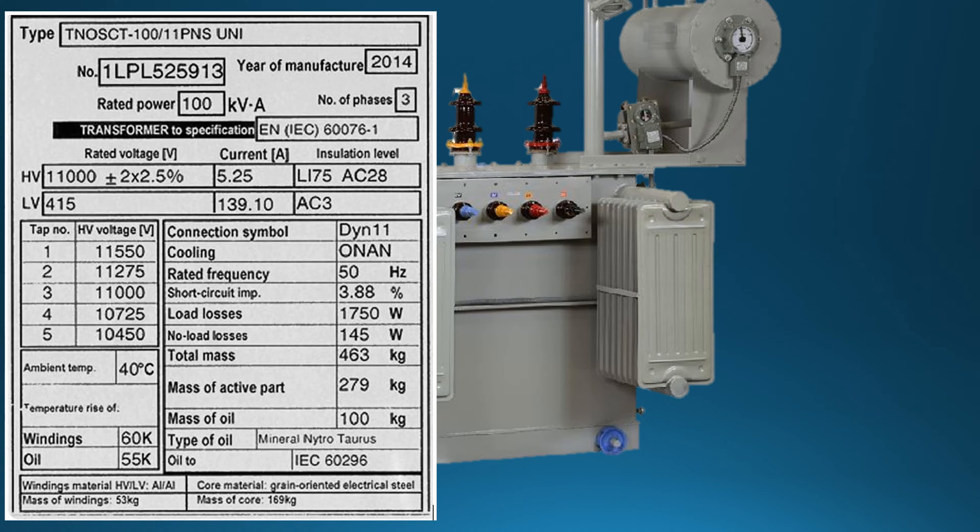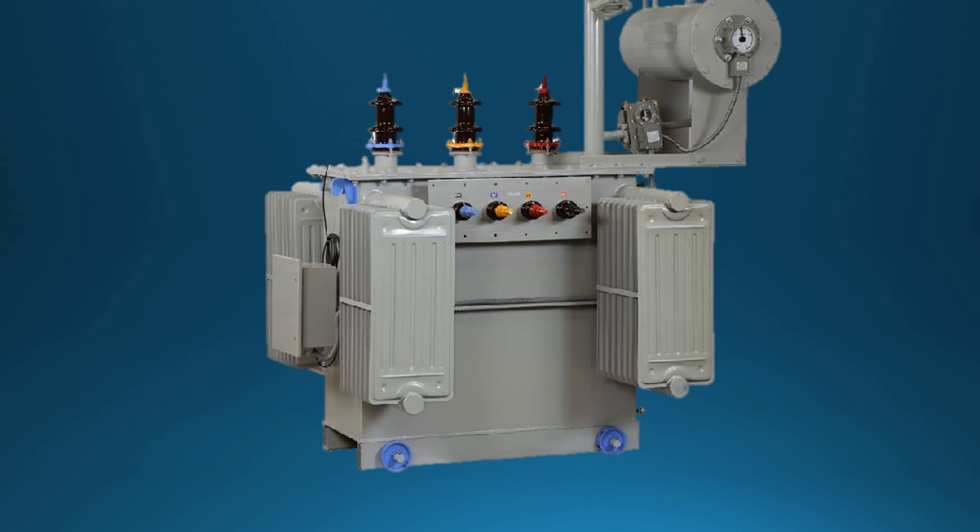It is a delta-star transformer. Primary windings are connected in delta configuration and secondary windings are connected in star connection. It has three primary bushings and four secondary bushings, including a neutral.